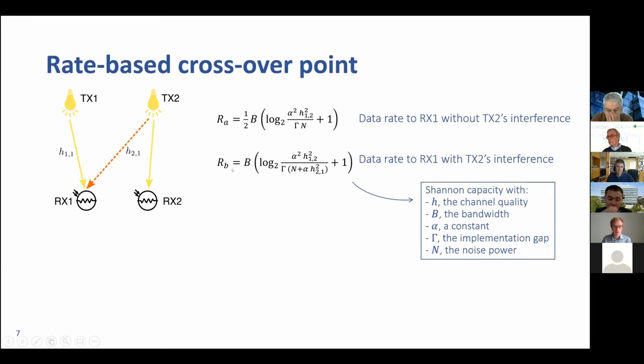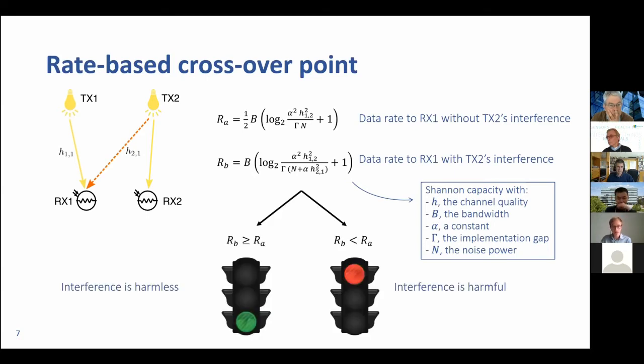On the other hand, configuration two allows the transmitters to work in parallel. If they work in parallel, of course they have interference from each other, but they don't have this factor half because they can operate all the time. This allows us to decide when these two transmitters can be active at the same time or not. Basically, if RB, the resulting throughput in the second configuration, is higher than RA, then we decide interference is harmless and they can operate at the same time. If it's not the case, and therefore it is better to silence transmitter two, then we say interference is harmful and we need coordination among the transmitters.